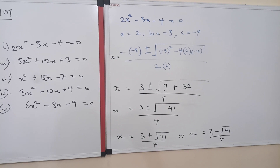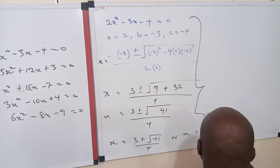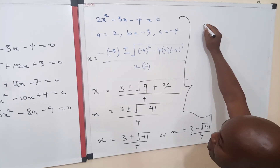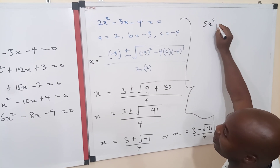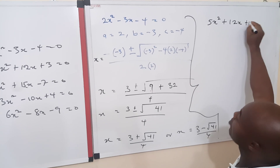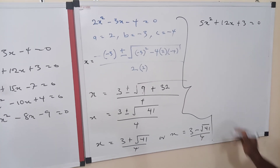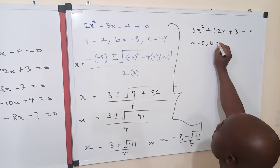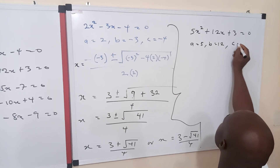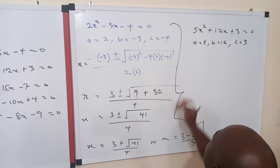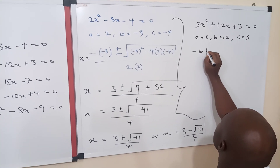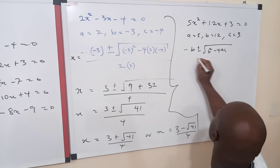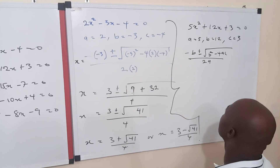Now let's consider another one — equation 2, where we have 5x squared plus 12x plus 3 equals 0. In this case, our a is 5, our b is 12, and our c is equal to 3. The formula we are going to use is negative b plus or minus the square root of b squared minus 4ac, all over 2a.